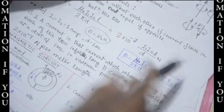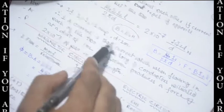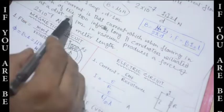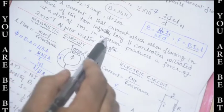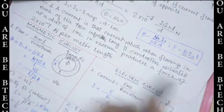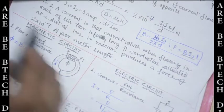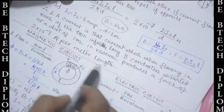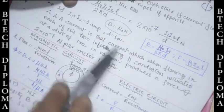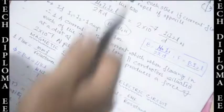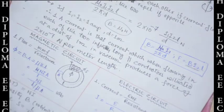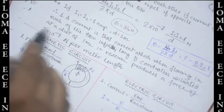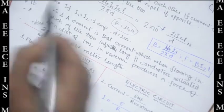Now, if I₁ = I₂ = 1 ampere and D = 1 meter, we can define 1 ampere of current. One ampere is that current which, when flowing in each of two infinitely long parallel conductors situated at a distance of 1 meter in vacuum, produces a force of 2 × 10⁻⁷ Newton per meter length. Remember this.